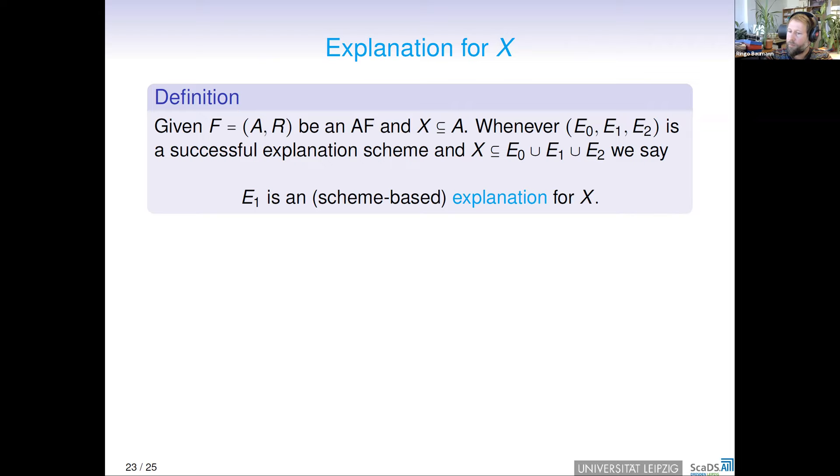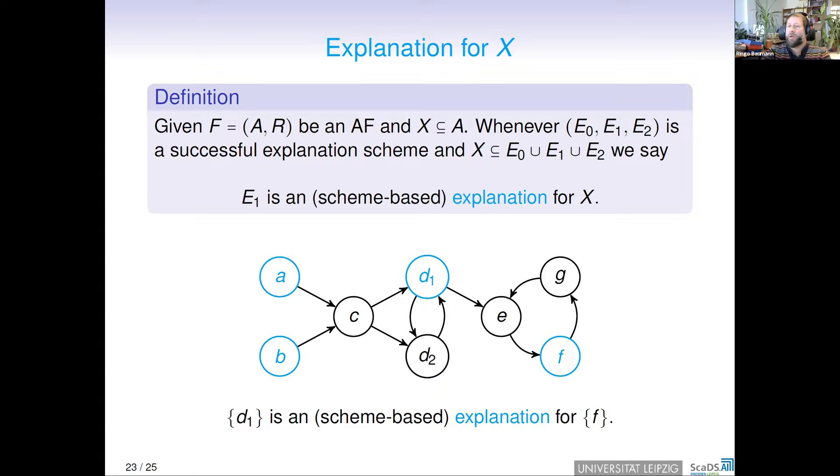Let's come back to the example. If somebody asks why we gradually accept F, we can say an explanation for F is the choice D1, because this is the only thing which was non-deterministic here, in this case, with respect to complete semantics.